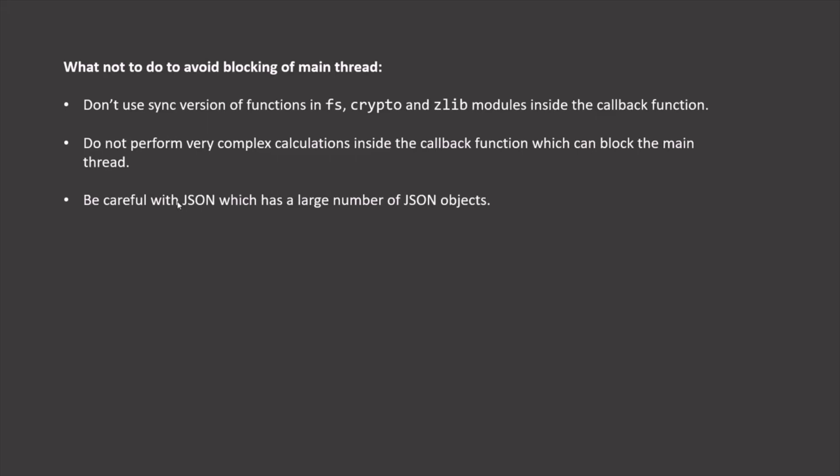For example, if you read a JSON file with hundreds of thousands of objects inside a callback function and stringify it, it might block the main thread. Finally, don't use overly complex regular expressions inside callback functions — this can also affect performance and block the main thread. These are some high-level guidelines for avoiding blocking of the single thread. There are also potential solutions to this blocking problem, such as manually offloading callbacks to the thread pool or using child processes, which will be covered in future lectures.